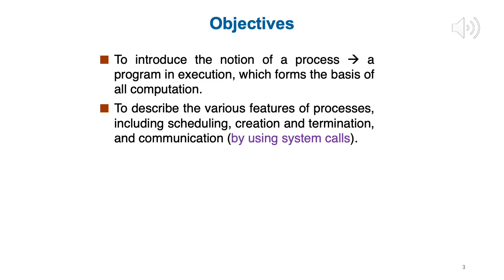Now on slide 3, this course has a bunch of objectives and likewise each chapter also has some objectives. The objectives for chapter 3: what is the knowledge you can hope to have once we finish this chapter? The first objective is to introduce the notion of a process, which is a program in execution, which forms the basis of all computation. One of the most important goals of an operating system is to provide an environment in which applications can run on the hardware.